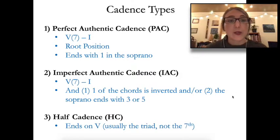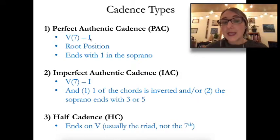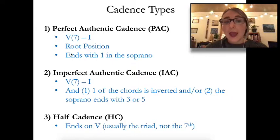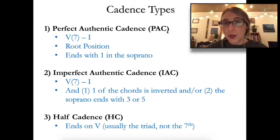We have three cadence types that we need to be able to identify. The first is a Perfect Authentic Cadence, also called the PAC. This has to have a five or a five-seven to a one, and for a PAC both of these chords need to be in root position and the one chord needs to end with scale degree one in the soprano.